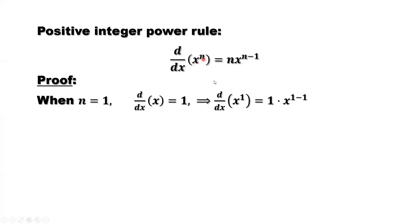So x to the power 1 is here. The right-hand side is 1, where 1 is n, times n minus 1, which is 1 minus 1. This power rule, when n equals 1, is true.